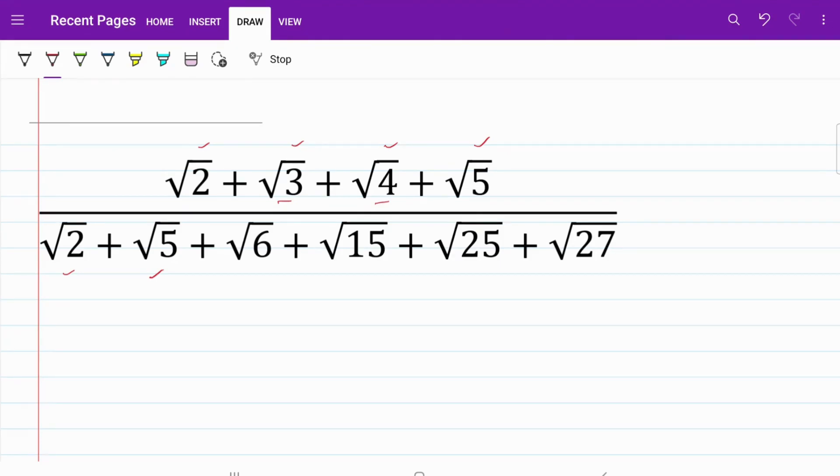For the remaining four numbers on the denominator, all of them are products of two or more numbers. For the first two, √6 and √15, the way to break them down is fairly straightforward. I can express √6 as the product of √2 multiplied by √3. Likewise, for √15, I can express that as √5 multiplied by √3.